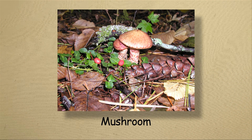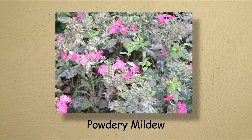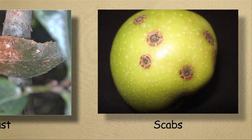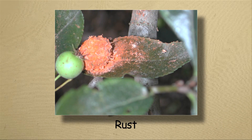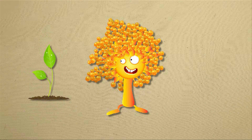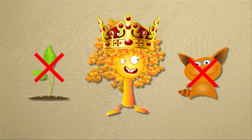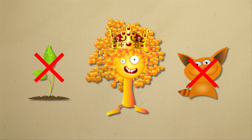So what exactly is a fungus? One familiar type is the mushroom, which can be easily seen. Other fungi that aren't so obvious include powdery mildews, scabs, and rust. Since fungi lack chlorophyll and can't make their own food, they're actually in their own little kingdom.